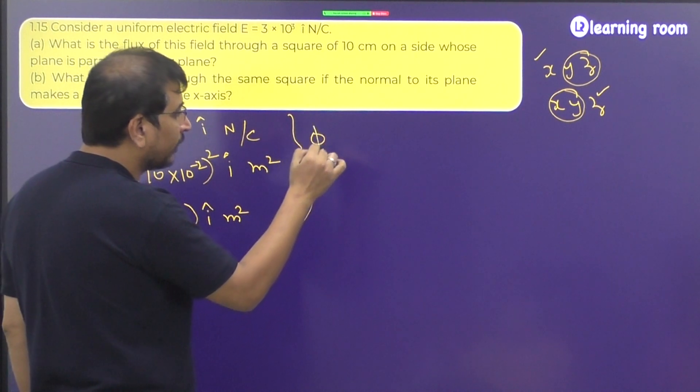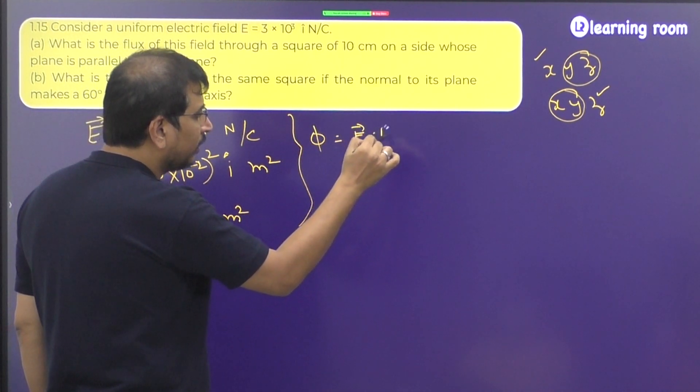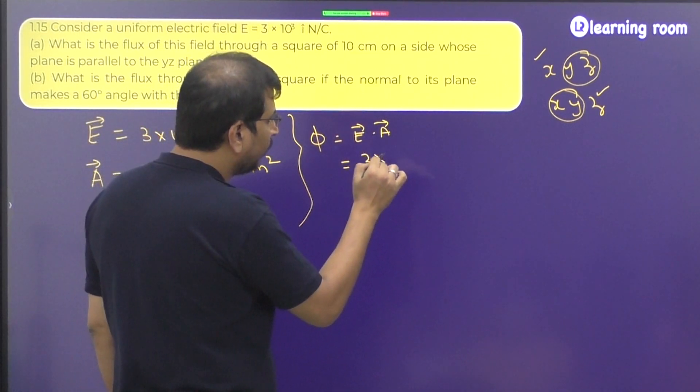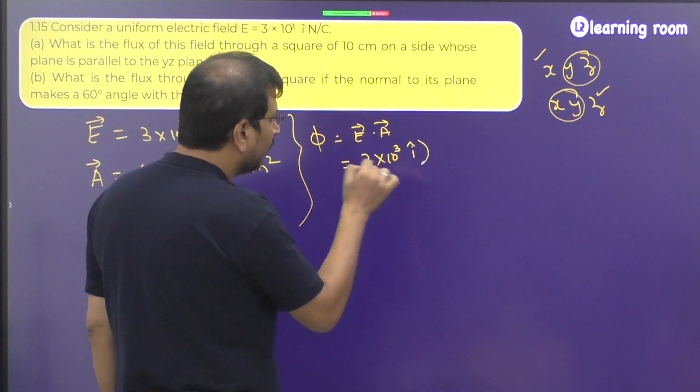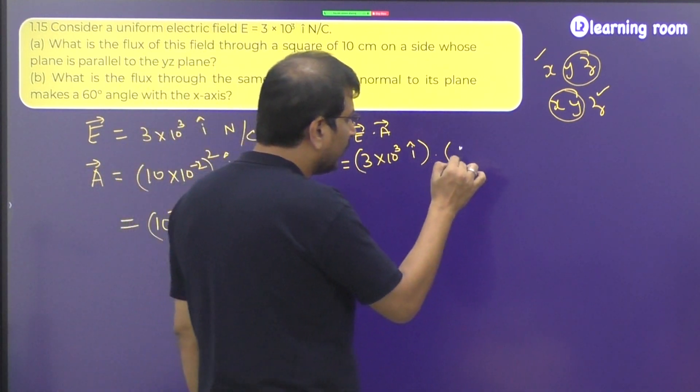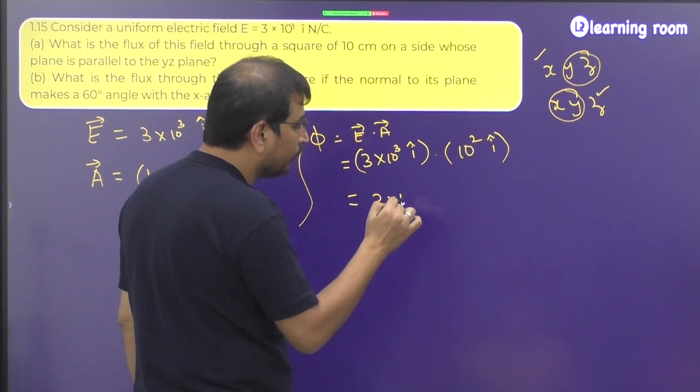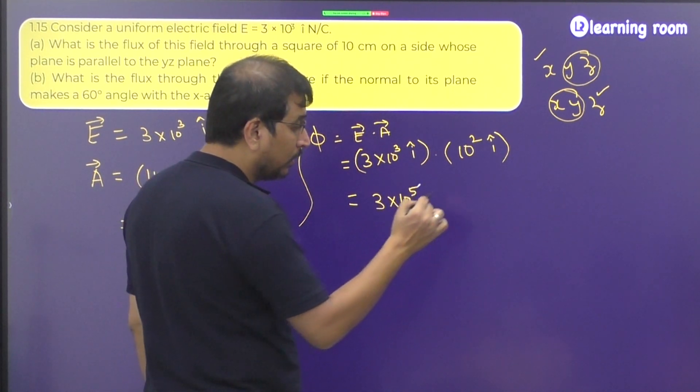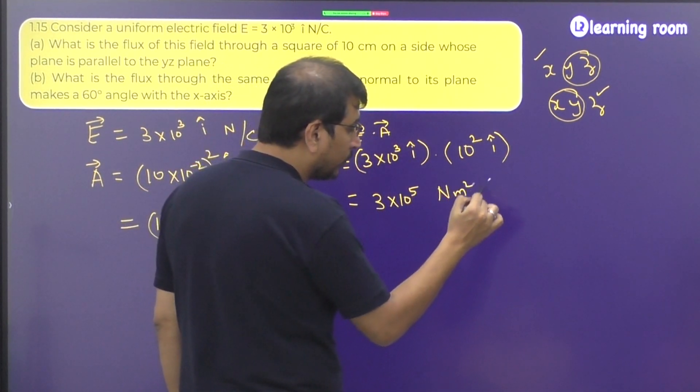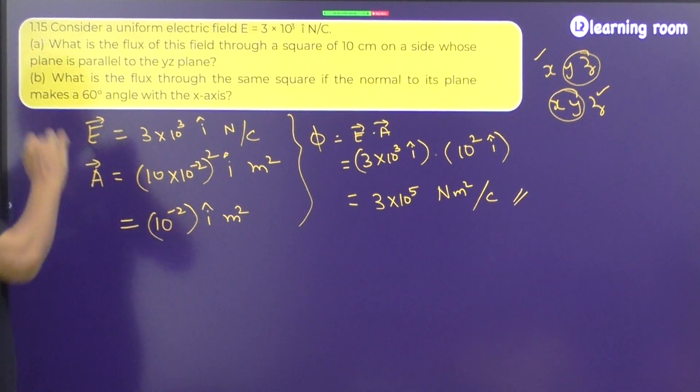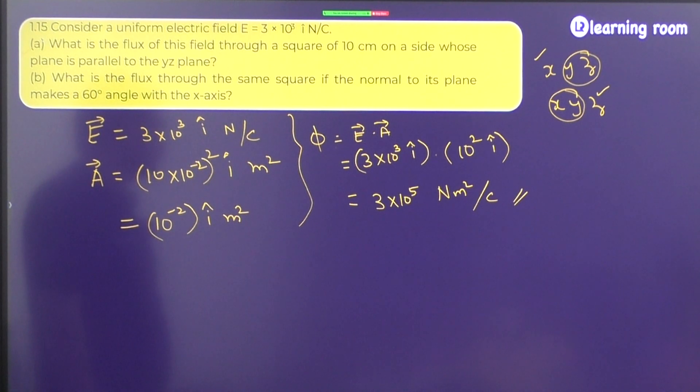So what is going to be the flux value? Flux is equal to E vector dot A vector. E vector is 3 into 10 power 3 I cap dot A vector is going to be 10 square I cap. So answer will be 3 into 10 power 5 Newton meter square per coulomb. So this is going to be the flux in the first case.